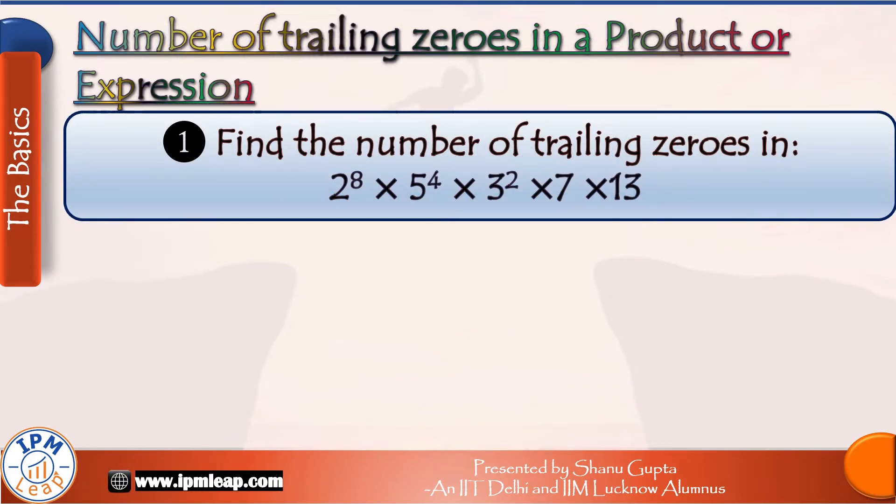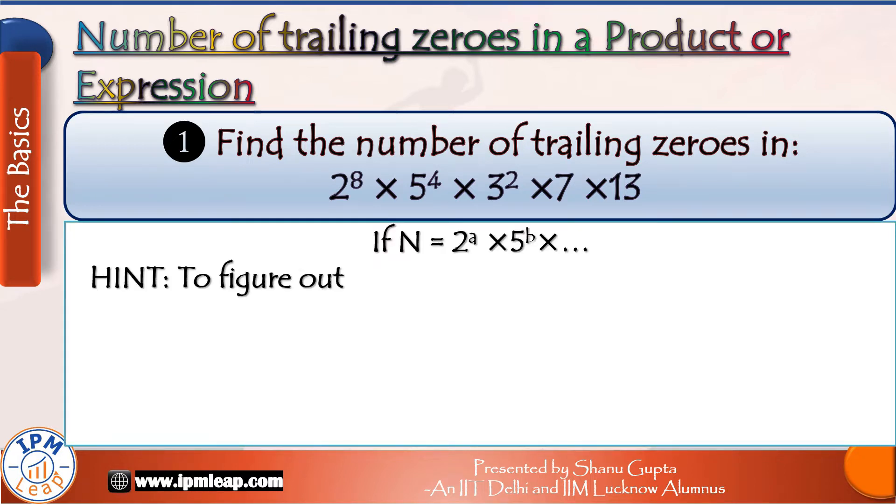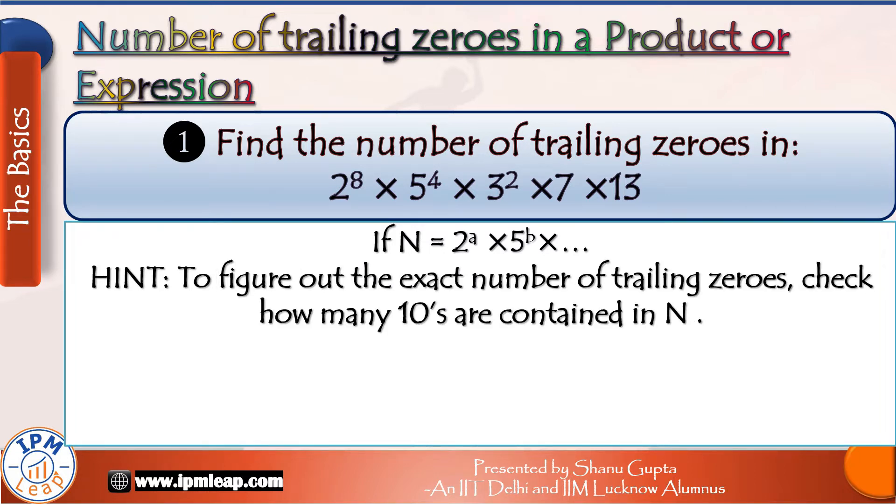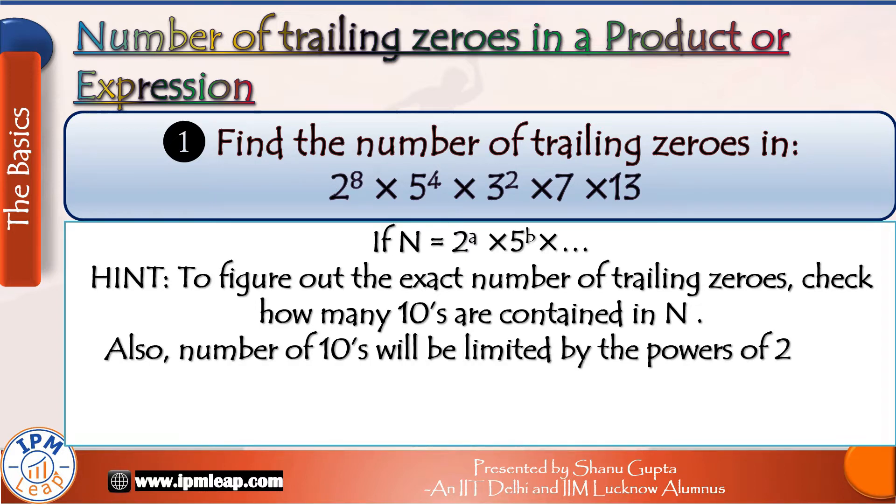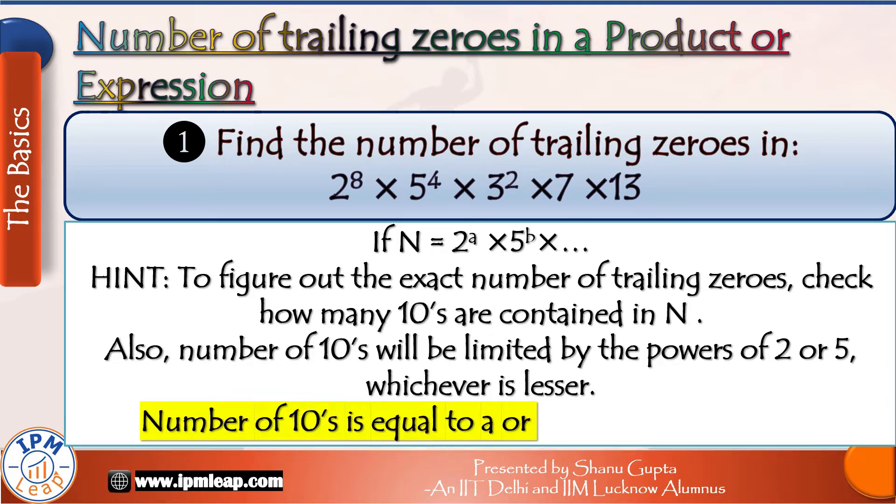Let's move on to our first question on this topic. This question will further help us understand the concept and build a proper method to solve such questions. Find the number of trailing zeros in 2^8 × 5^4 × 3^2 × 7 × 13. In this question, a number is given to us in its prime factorization form. We have already seen that the number of trailing zeros is simply equal to the number of tens contained in the product. So this long expression, we don't need to calculate its value to solve this question. You will be wasting a lot of your precious time if you do that.